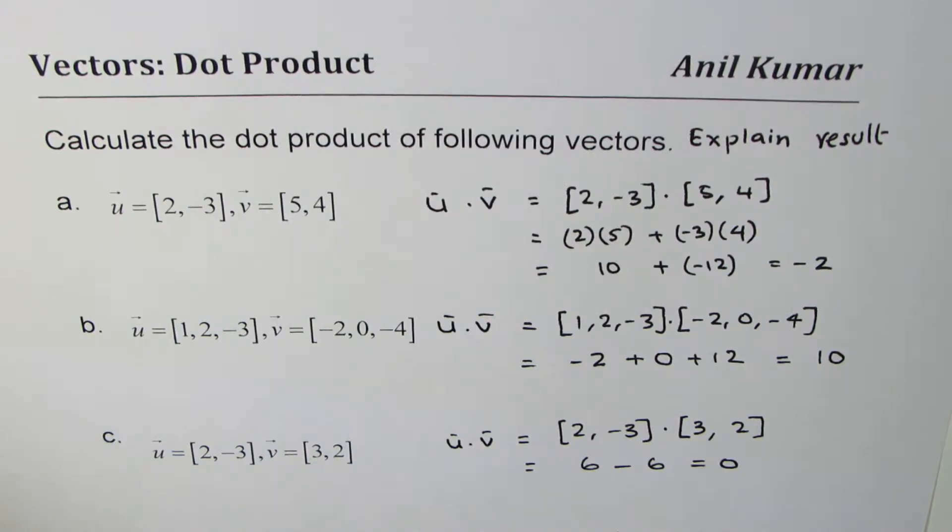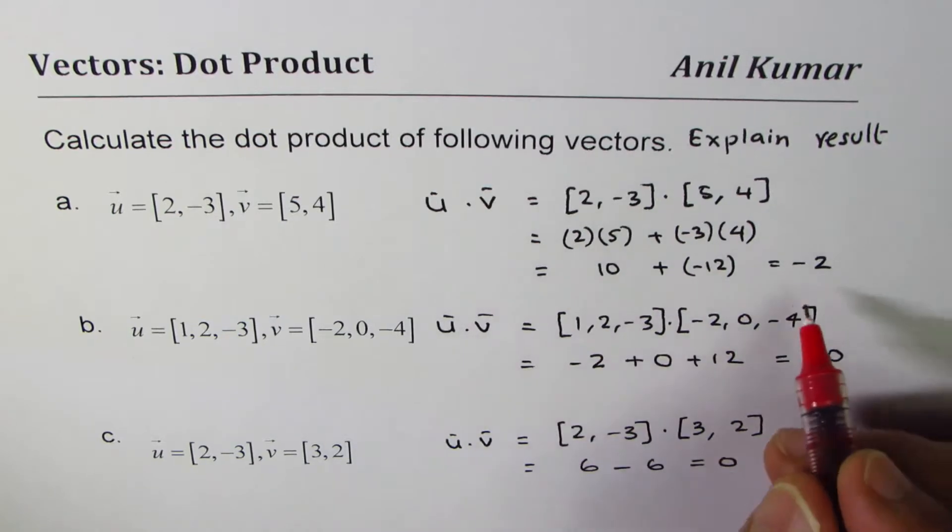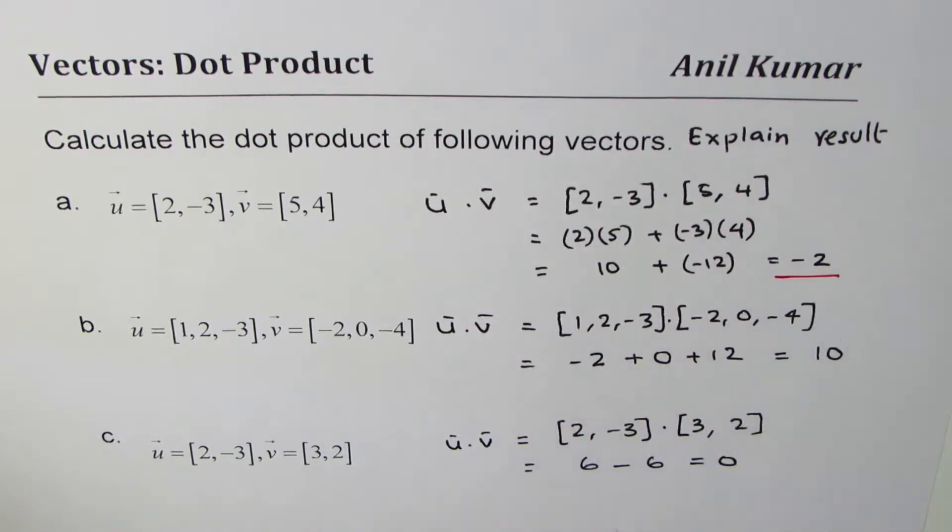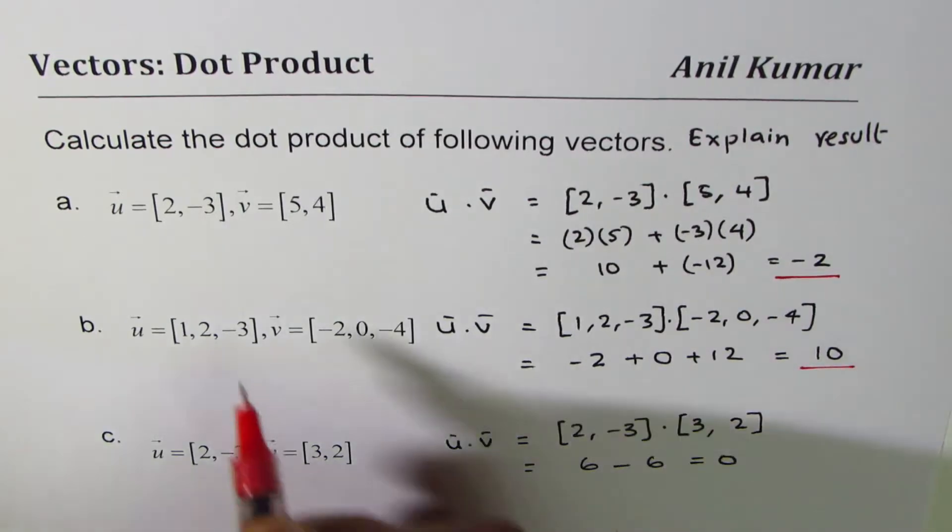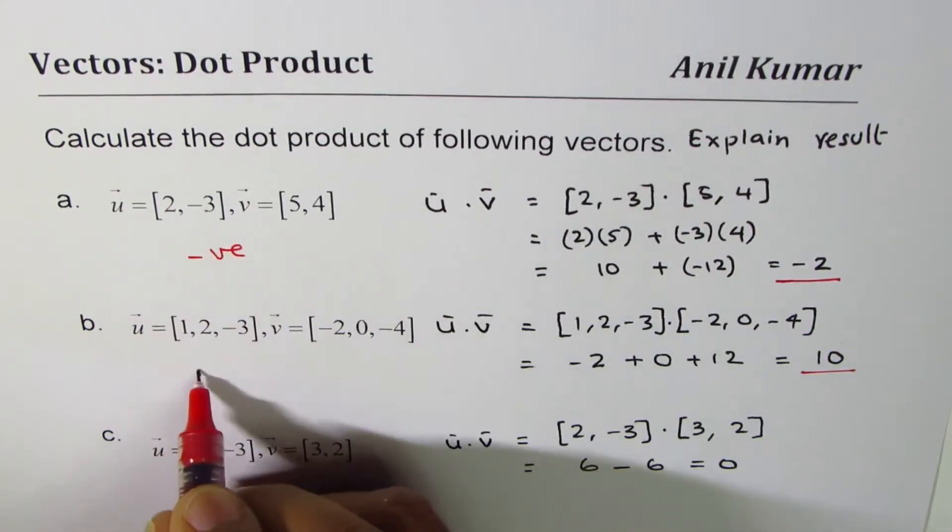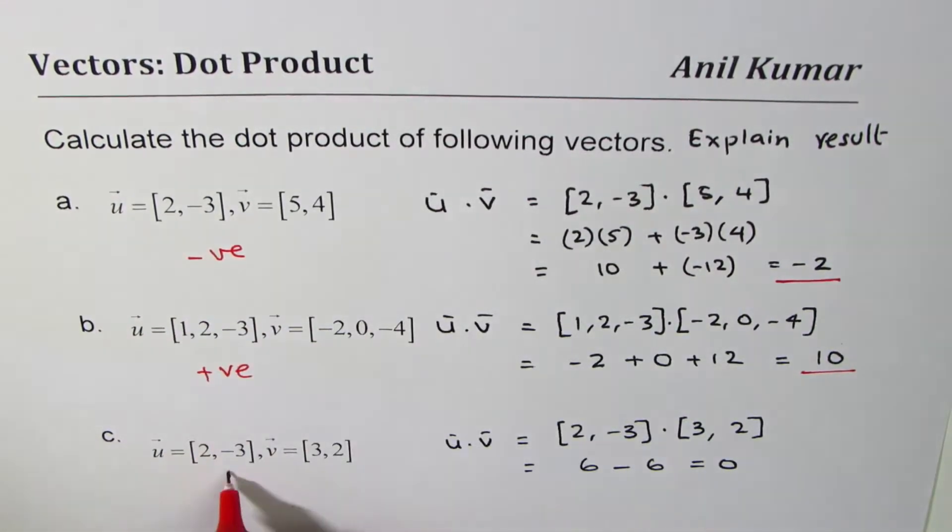2 times 3 is 6, minus 3 times 2 is minus 6, and you get 0. Now what do you observe here is that in the first case the dot product is negative, here it is positive. So we get a negative result, this is negative, this positive, and this one is 0.